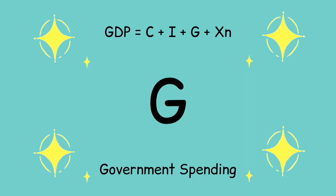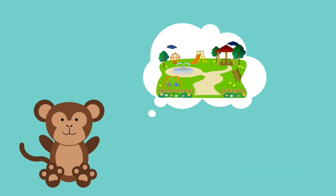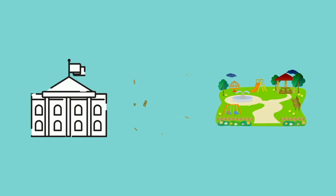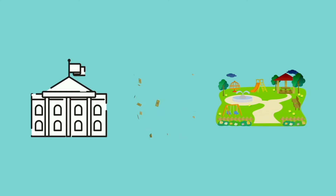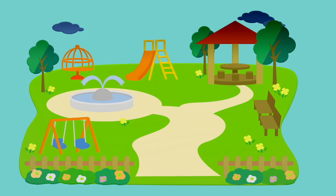G stands for Government Spending. Think of your favorite public park. Do you need to pay every time you visit the park? No. This is because it is paid for by the government through the collection of taxes. This is one example of government spending.